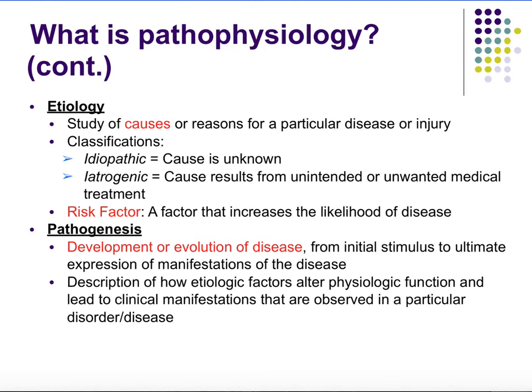So what is etiology? Etiology is the study of the cause or reason for a particular disease or injury — basically, what caused it. One classification is a disease etiology being idiopathic, which just means we don't know. We still don't know; more research needs to be done.